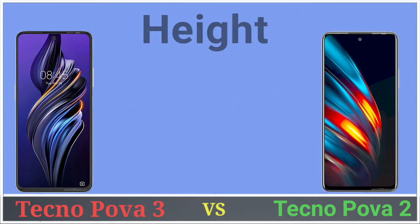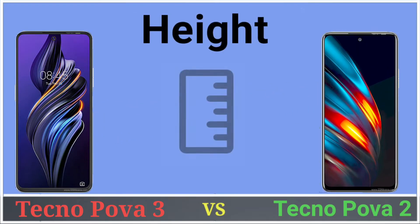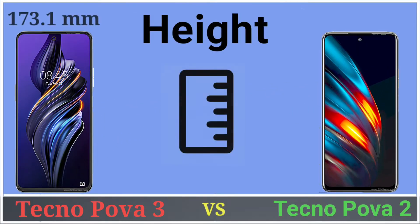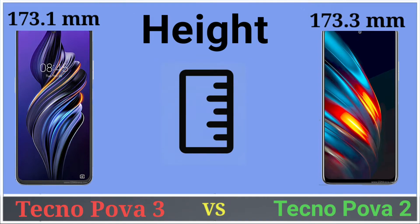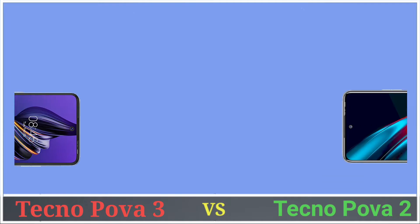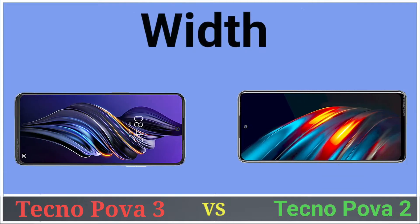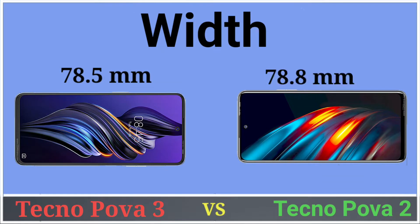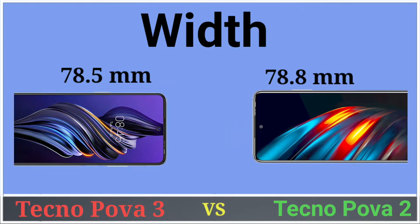Let's talk about dimensions. Height: Pova 3 has 173.1 mm height and Pova 2 has 173.3 mm height. Width: Tecno Pova 3 has 78.5 mm width and Tecno Pova 2 has 78.8 mm width.